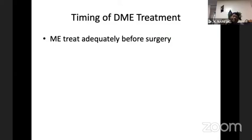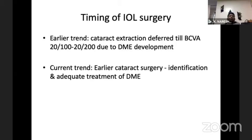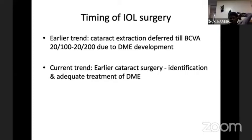Regarding timing of diabetic macular edema treatment, you can treat the macular edema adequately before surgery. The old trend was to defer cataract extraction until BCVA was 20/100 or 20/200 due to DME, then go for cataract surgery. But now the trend is early cataract surgery so that you can identify and treat the DME early, since in the presence of cataract it is difficult to do a proper OCT. Clear media is better, so it is better to go for earlier cataract surgery and then treat.